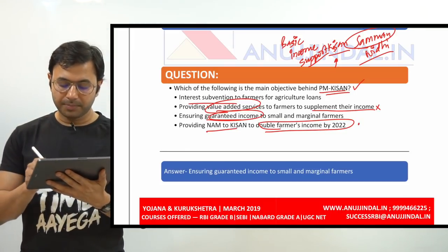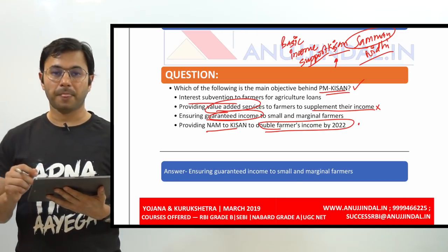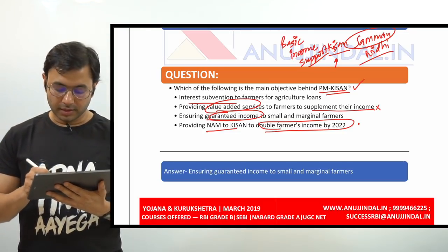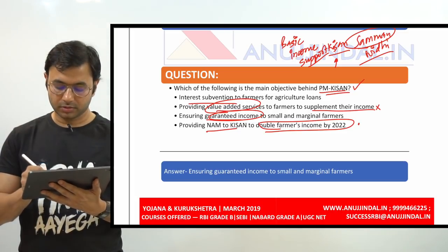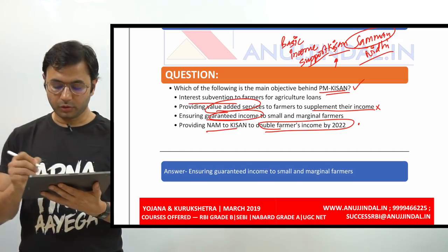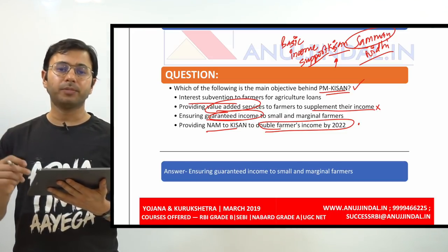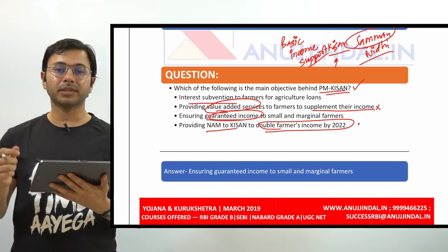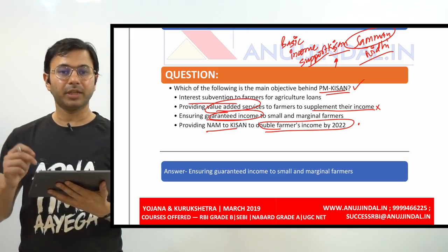Which of the following is the main objective behind PM Kisan? First, let me ask you: what is the full form of Kisan? Please write it in the comment section below. Let me tell you — Kisan stands for Kisan Samman Nidhi, so the full form is Pradhan Mantri Kisan Samman Nidhi.